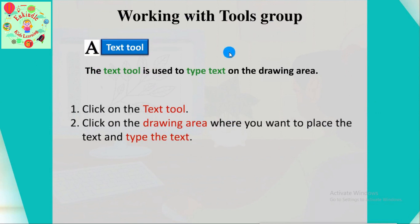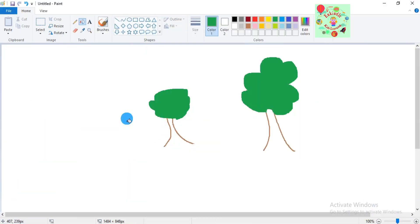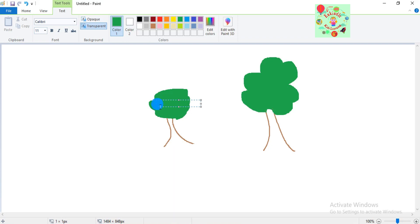Our next tool is the text tool, denoted by the letter T symbol. The text tool is used to type text on the drawing area. For example, if I want to write a name on a house I've drawn, I click on the text tool and type my text. To use it: click on the text tool, then click on the drawing area where you want to place the text, and type your text. You can also select any color to type the text in.